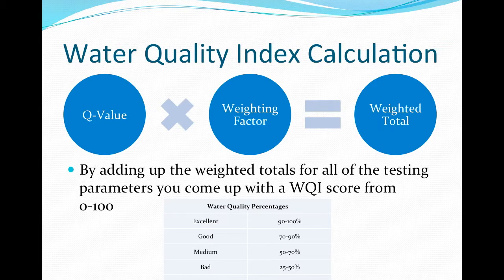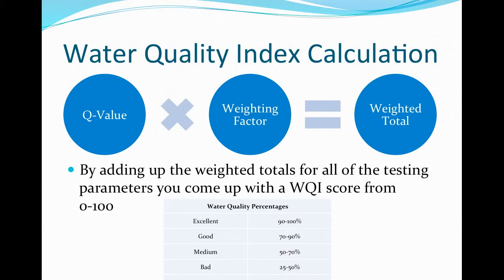We will continue this lesson by calculating the water quality index score for a sample of water provided by your teacher. In this lab, we will measure six water quality parameters. Once you have experience using the WQI, play the Fishkill game as part of the virtual boat available at the App Store. This game will allow you to see how different sources of pollution impact water quality index parameters along the Ohio River. Play the Fishkill game and calculate the WQI score for each site.